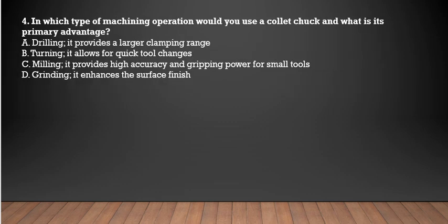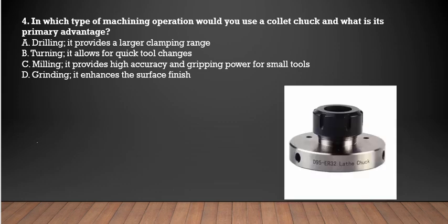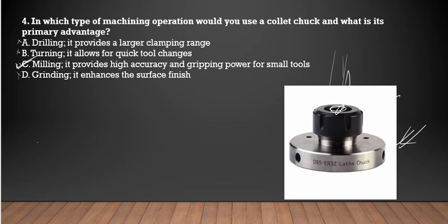Next question: in which type of machining operation would you use a collet chuck, and what is its primary advantage? A collet chuck is used to grip tools — it provides a gripping mechanism for tools. It is used in drilling, turning, and grinding operations. It provides high accuracy and gripping power for small tools.